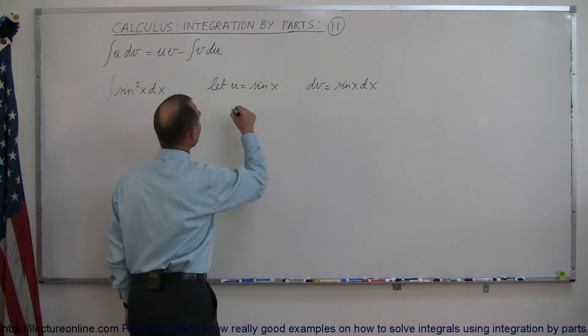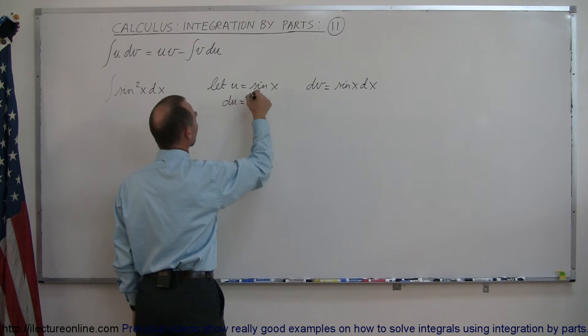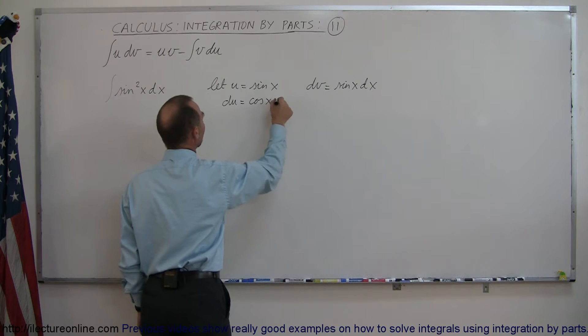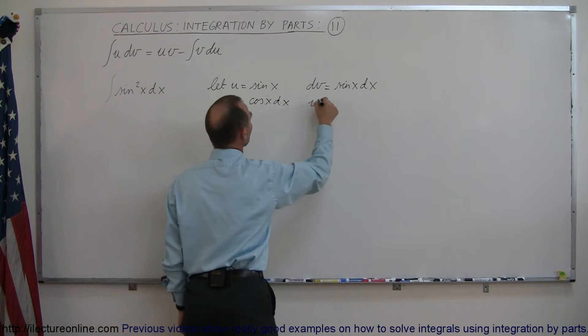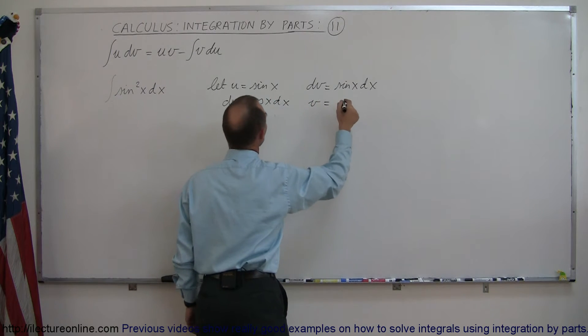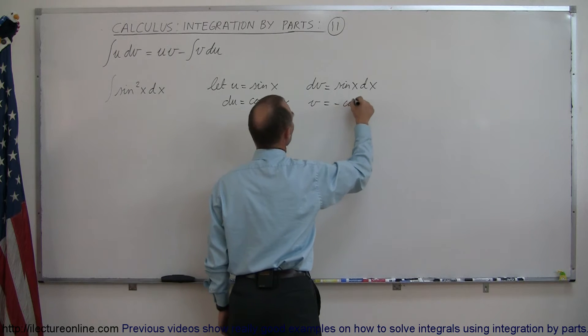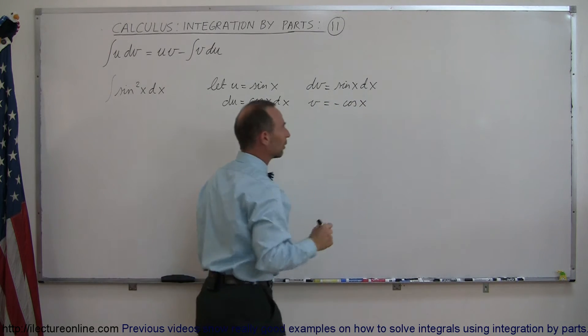That means that du, which is the derivative of sine of x, is the cosine of x dx. And v, which is the integral of the sine of x, is going to be minus the cosine of x, plus of course the constant of integration.